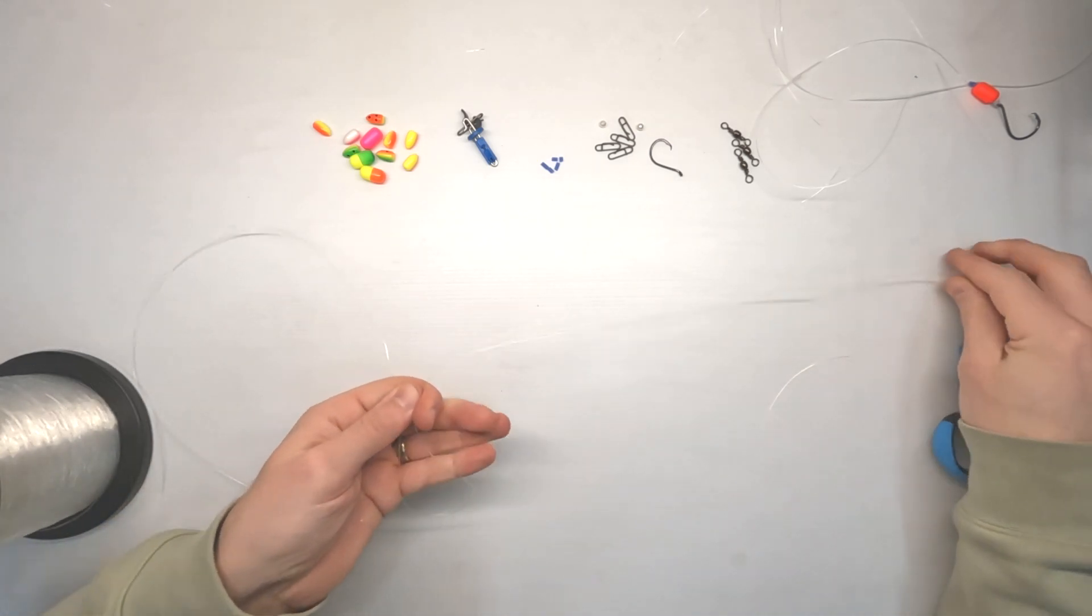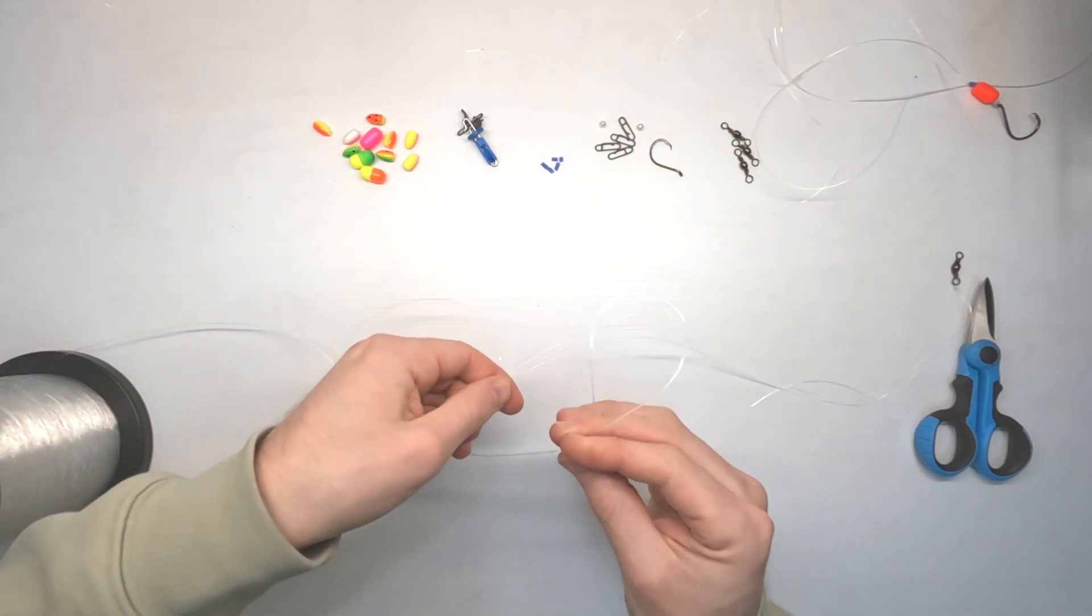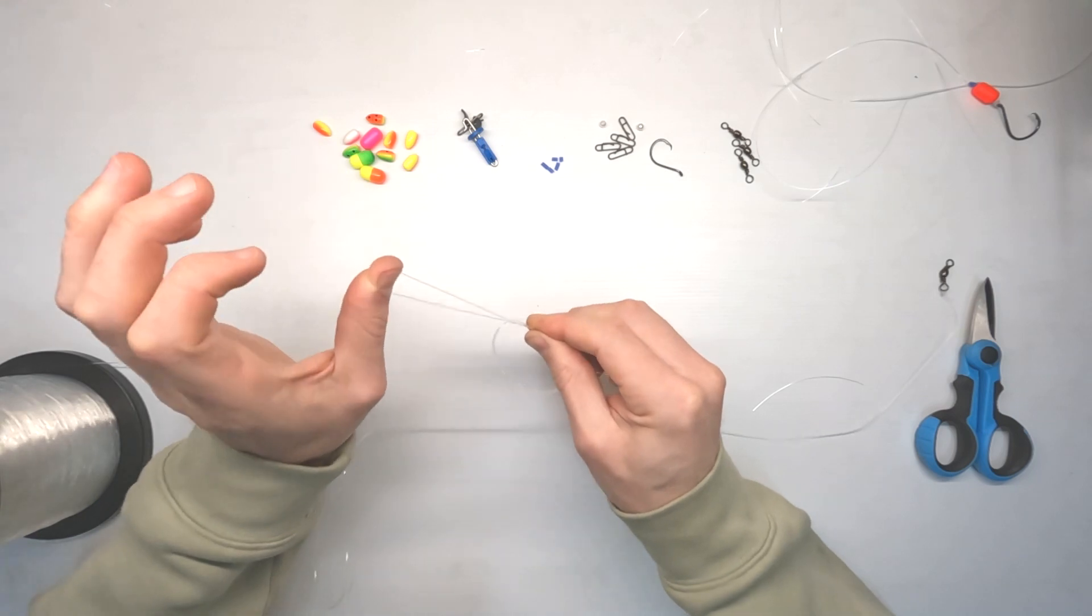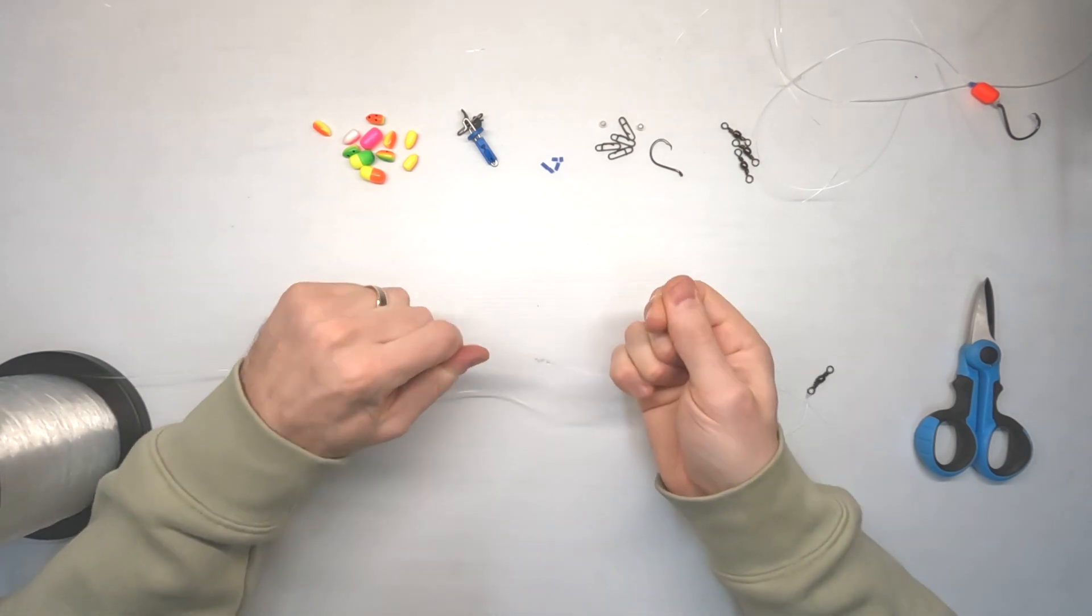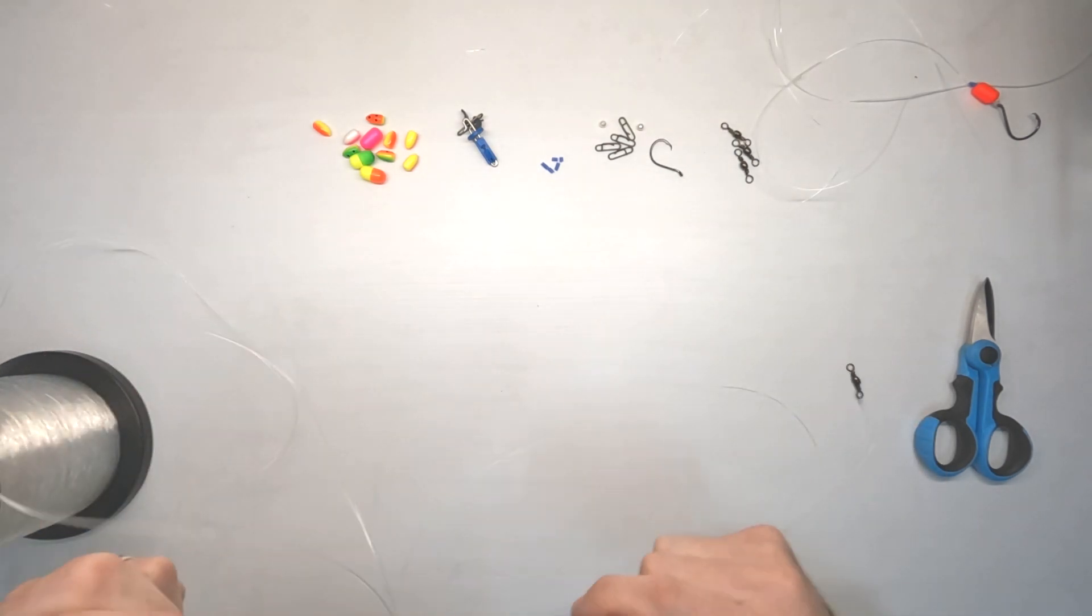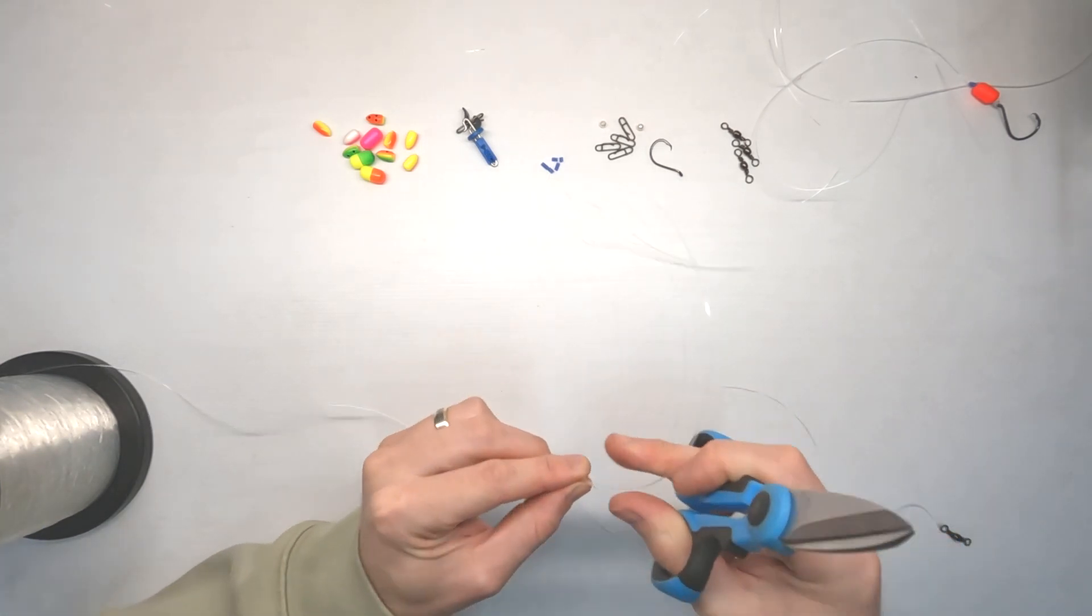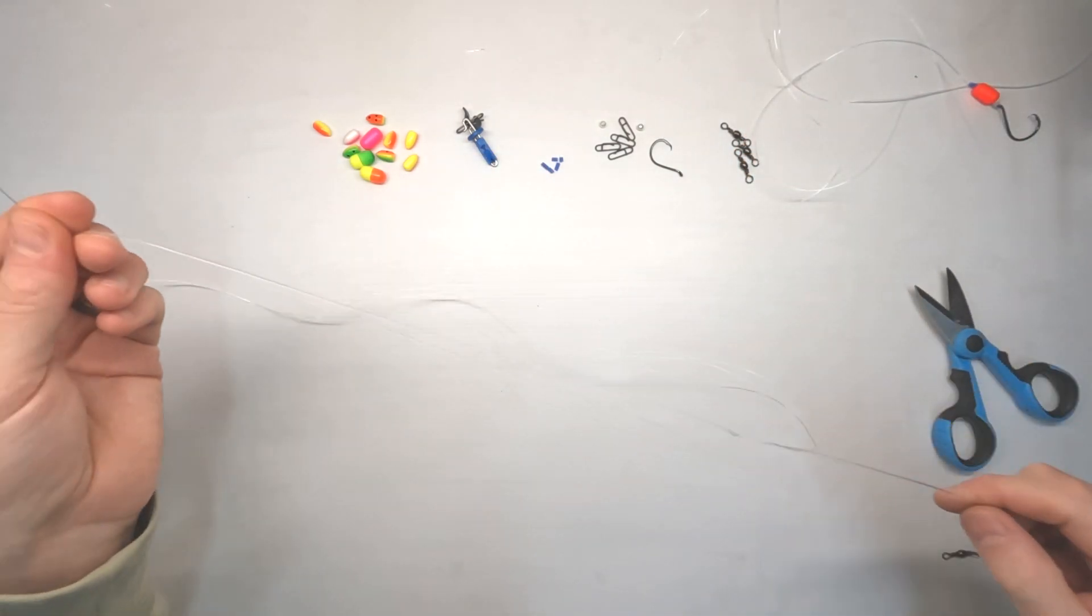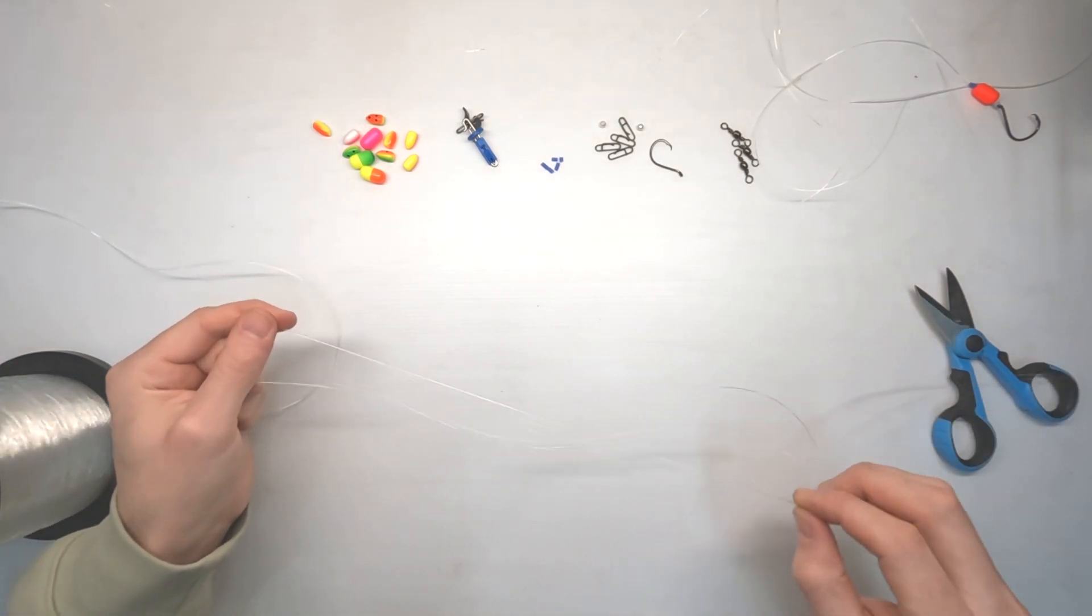Draw that up nice and tight, trim your tag end. Then we're going to come down a bit further this time, probably about 300-ish. Create that loop, again with that loop we create another loop, go through there two, three times, drawing the knot up under our fingers like so. Nice and tight. So then we've got the swivel, one loop. Cut that again so we've got a nice long strand, just clip that off. We're going to make this one a bit longer and you'll see why.